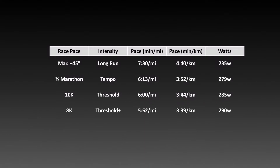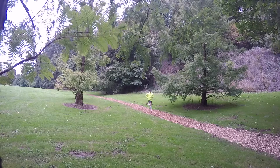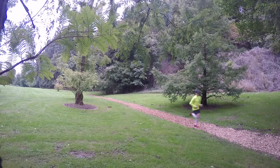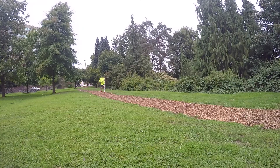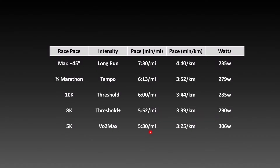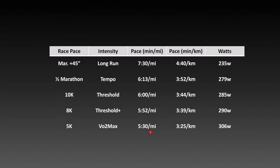For my 8K pace, which is threshold-plus or fartlek training, that's 290 watts. Then my 5K race pace, which is my VO2 max training range, is around 5:30 per mile or 3:25 per kilometer, which translates to 306 watts.